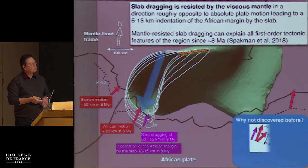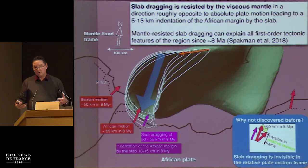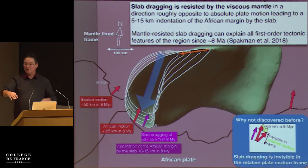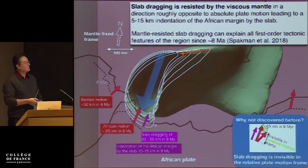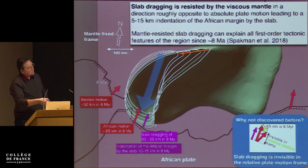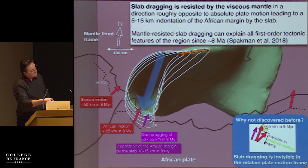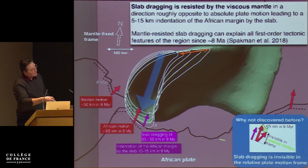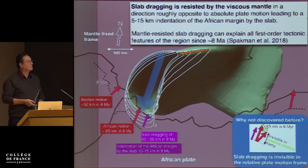Why was this not discovered before? Many people still study subduction systems in a relative plate motion sense — for example, taking Australia fixed and looking at how the Pacific subducts at Tonga-Kermadec. The same was happening here: the relative plate motion is northwest-southeast, so looking at the two absolute plate motion vectors and taking the difference, all the slab dragging is cancelled out. That is why it was not observed before.